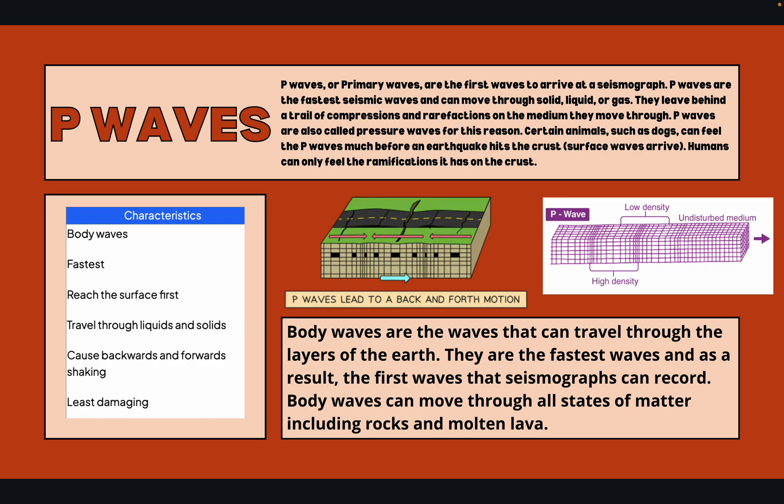Here are the characteristics of P waves: they are a body wave, the fastest, reach the surface first, travel through liquid, solids, or gas, and cause backwards and forwards shaking — as you can see from this image, the particles compress onto each other. They are the least damaging wave, since they are the primary wave.